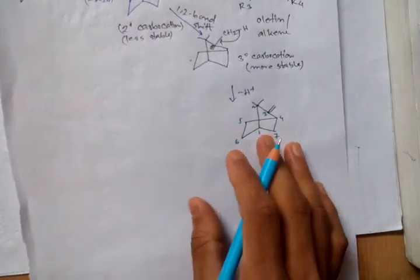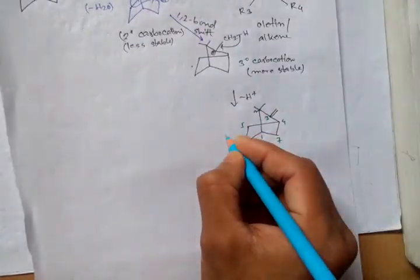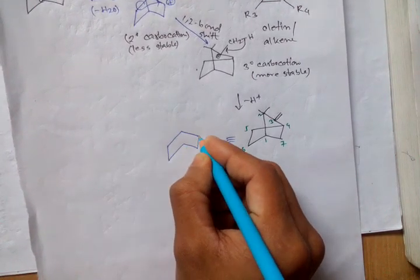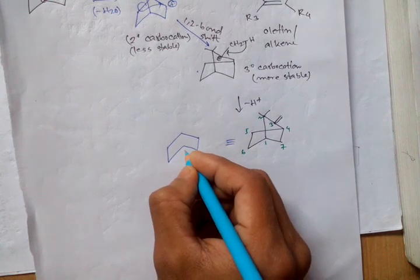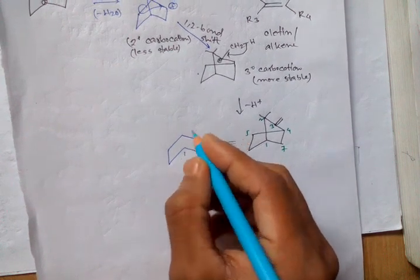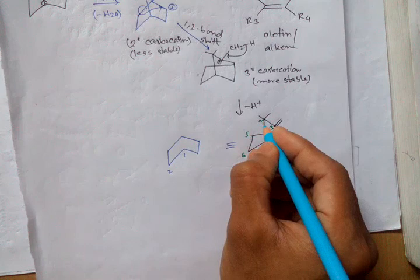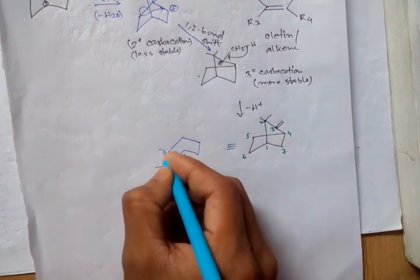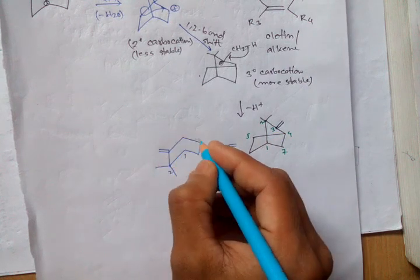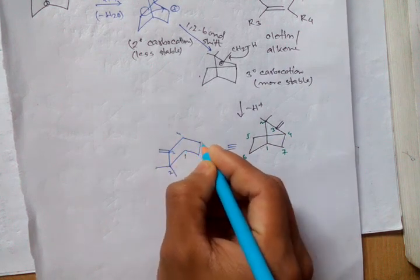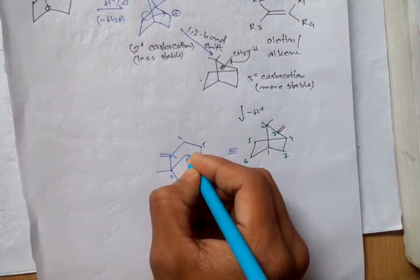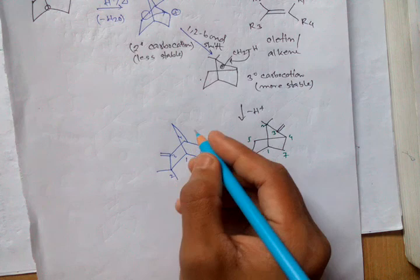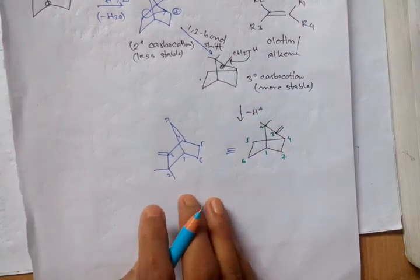So this is equivalent to... They are numbering... So this is 1, 2, 2, 2 carbon atoms contains 2 methyl groups. And 3 carbon atoms. It is double bond. 3, 4, 5, 6 and 7. Then it is V1. So we get this product.